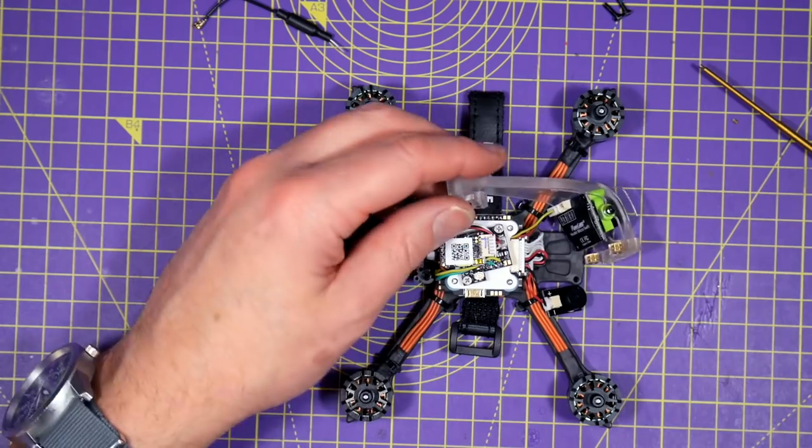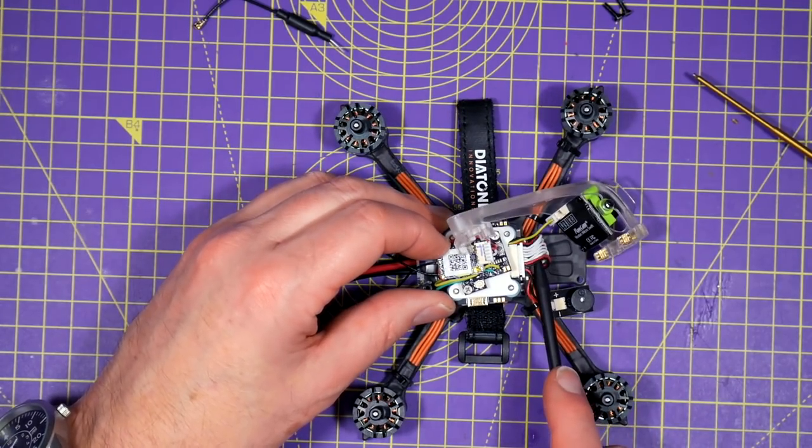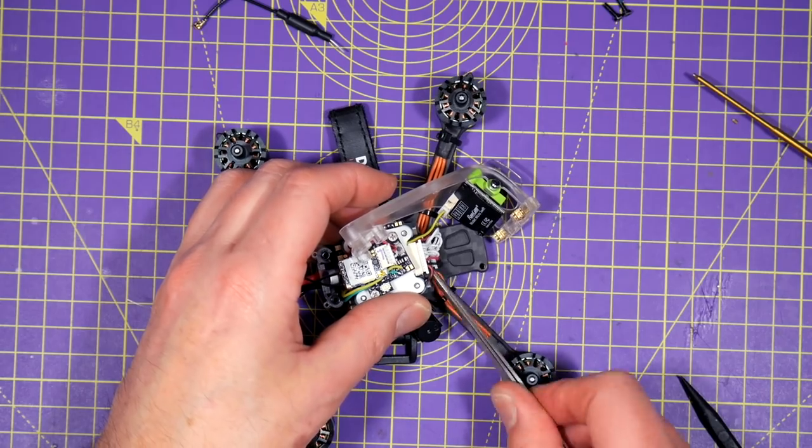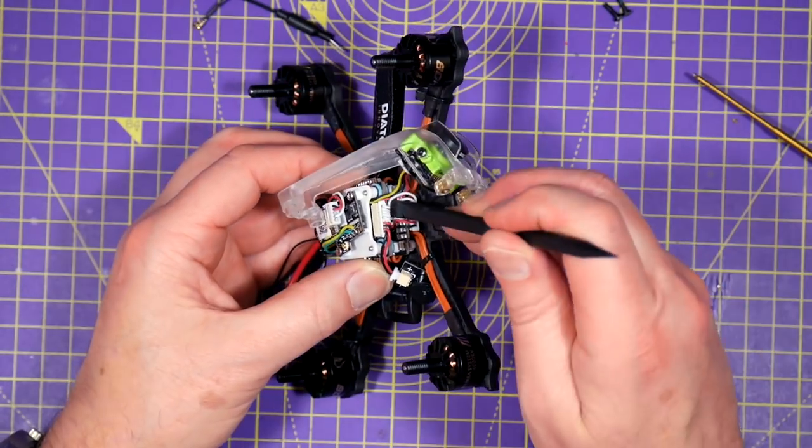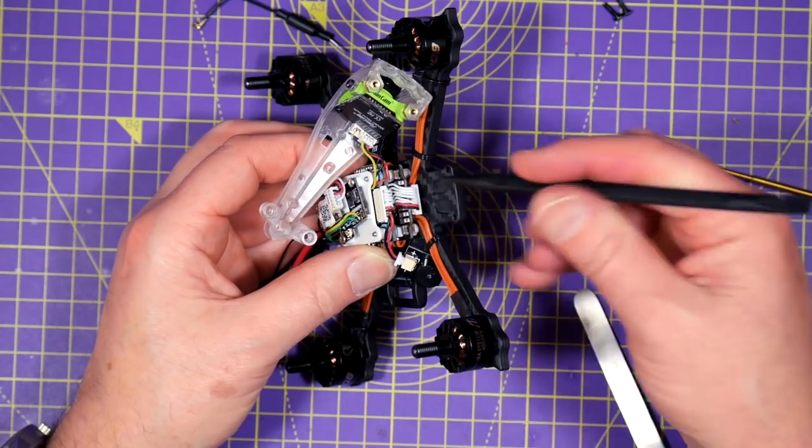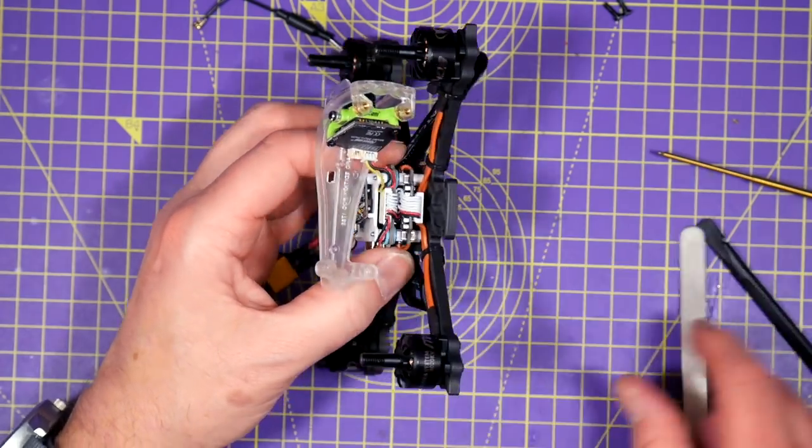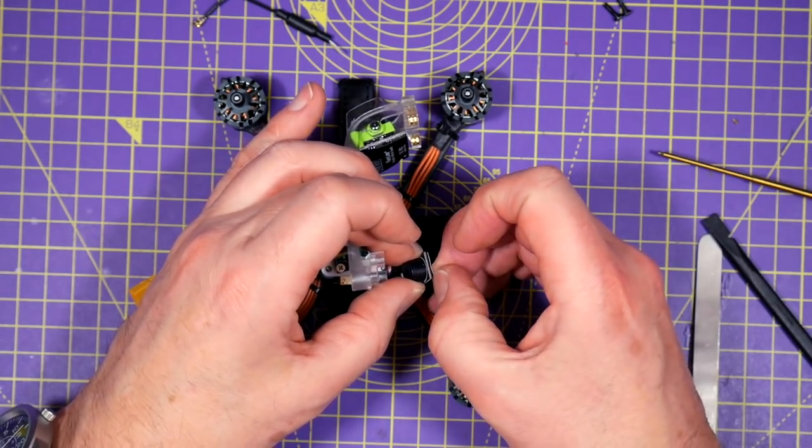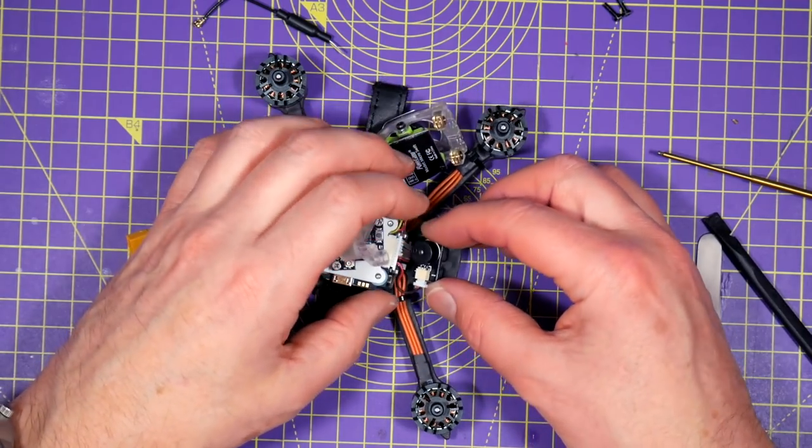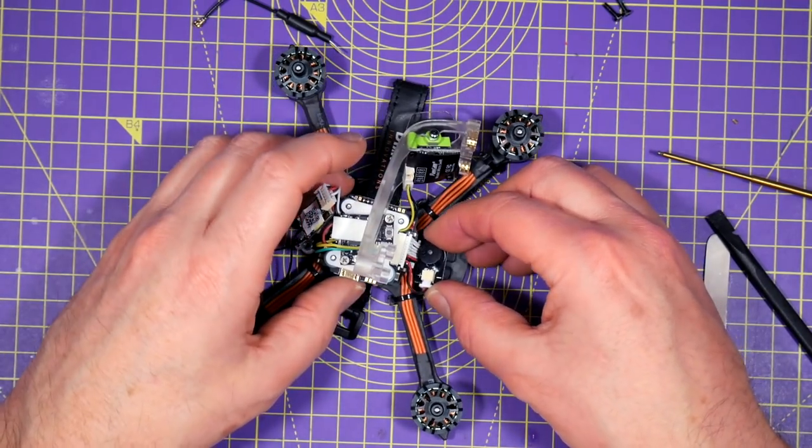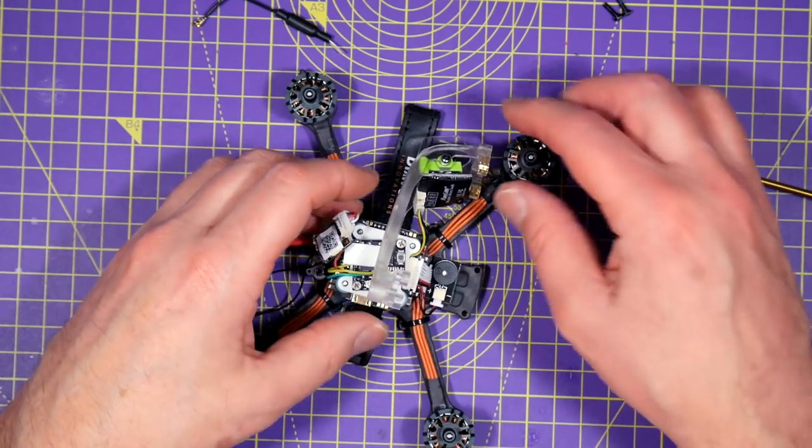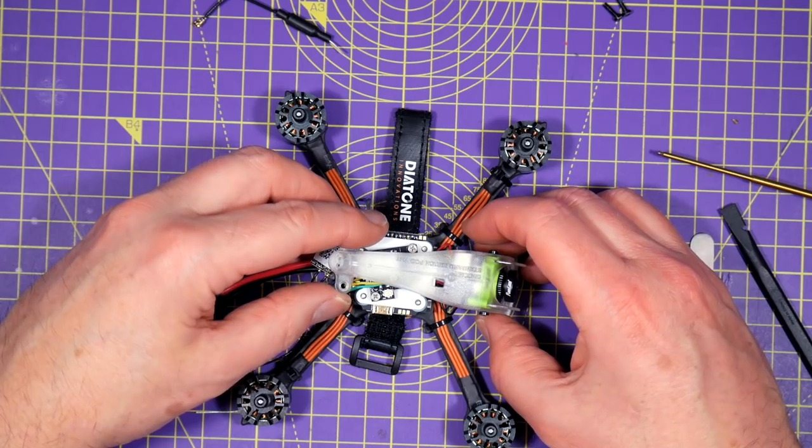I think we'll just tidy these wires out the way first. Push them between both the boards as carefully as possible. Then all you need to do is peel off the backing and this will stick direct to the frame. Make sure that you push this as close to the flight stack as you can so that it doesn't interfere with the angle of the FPV camera.